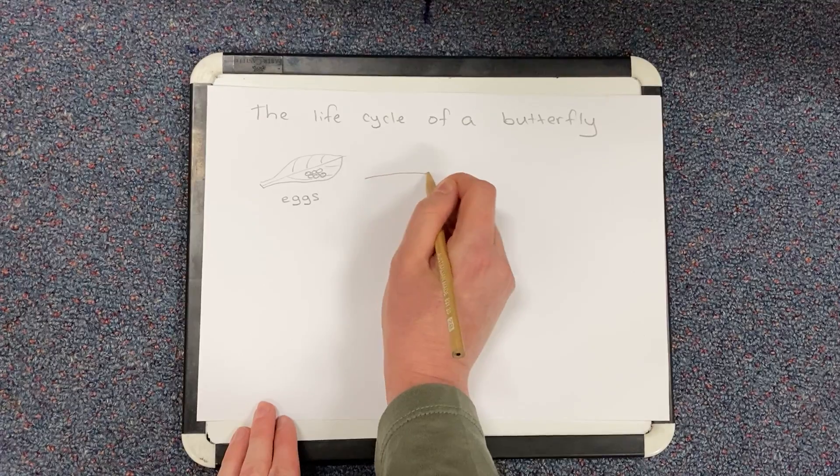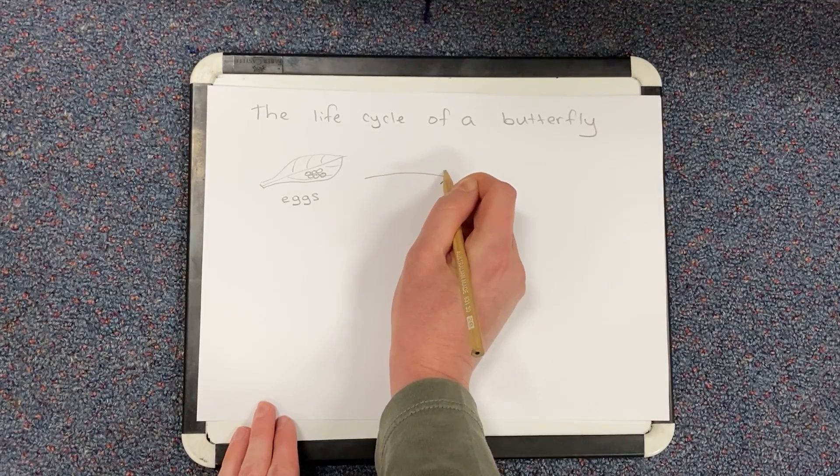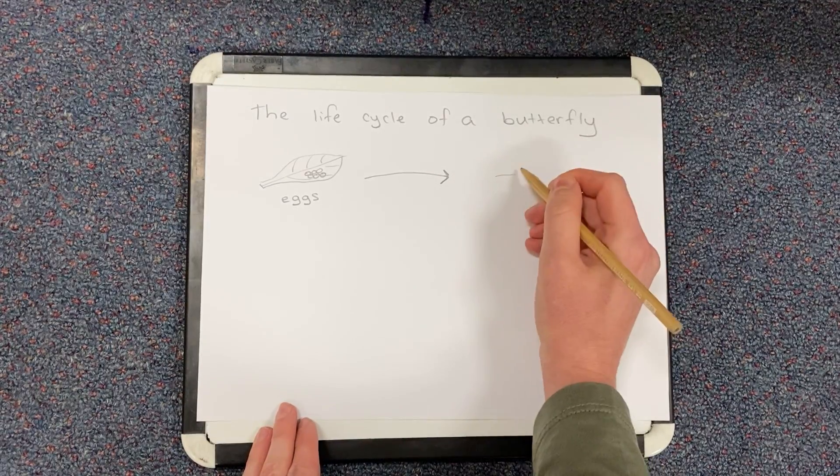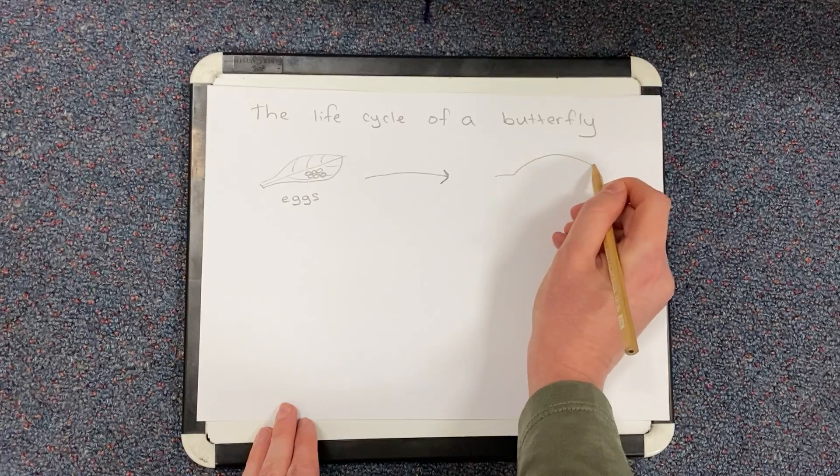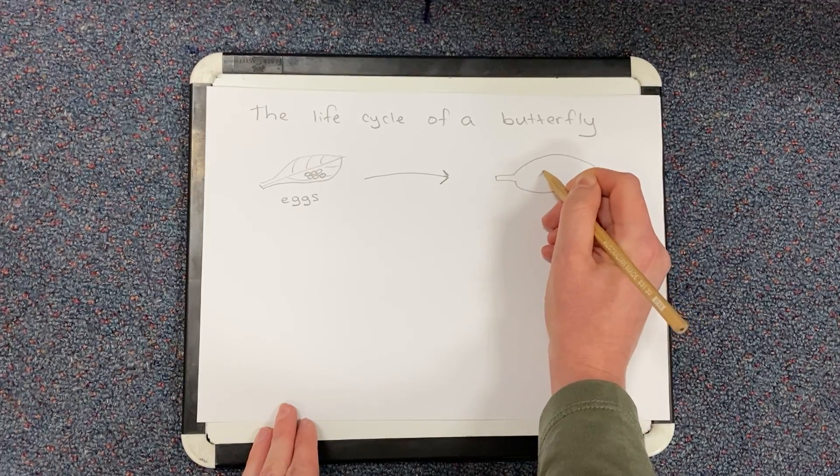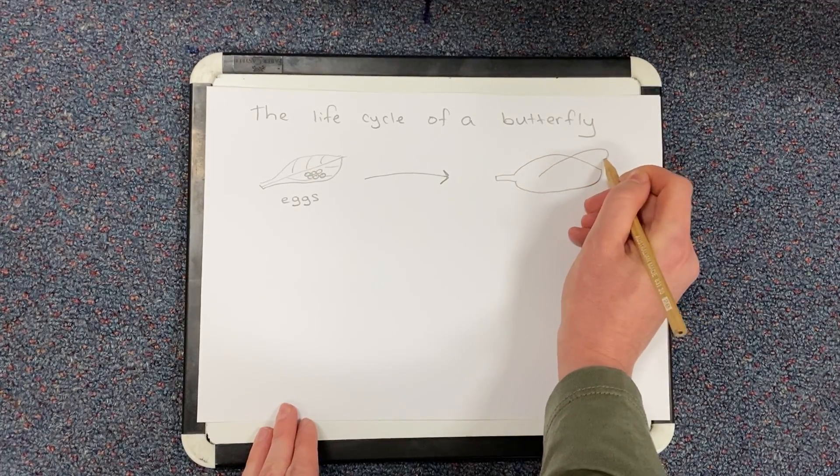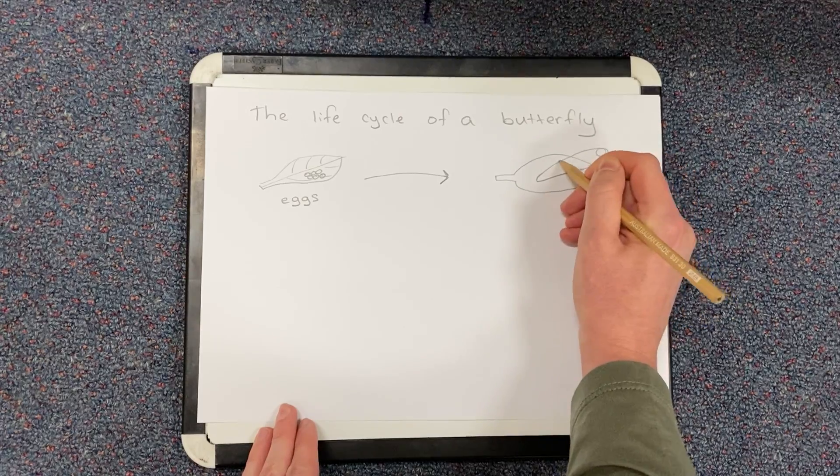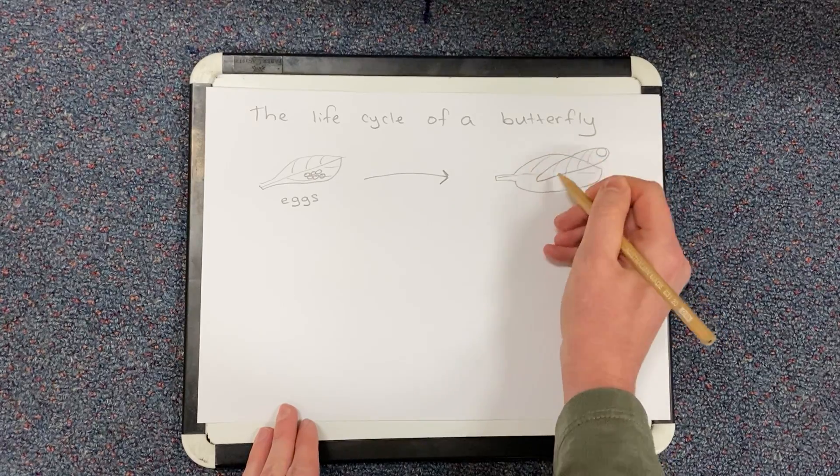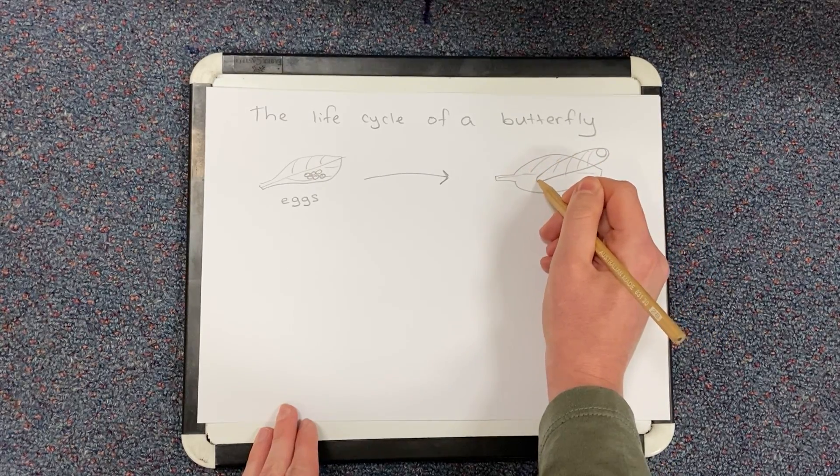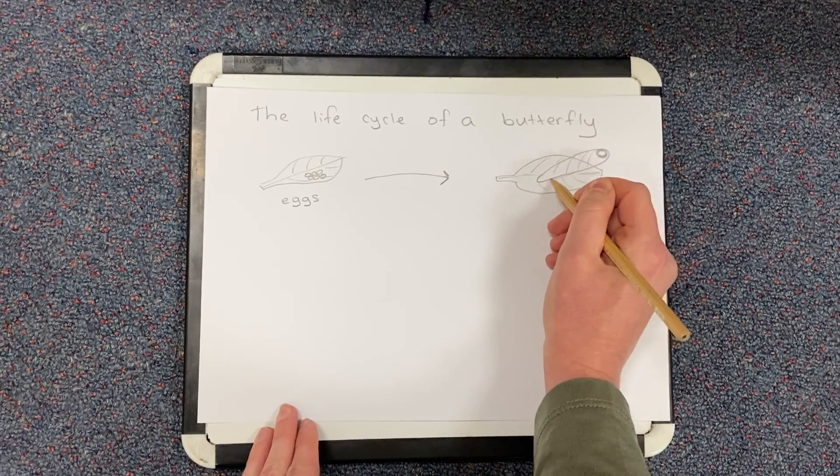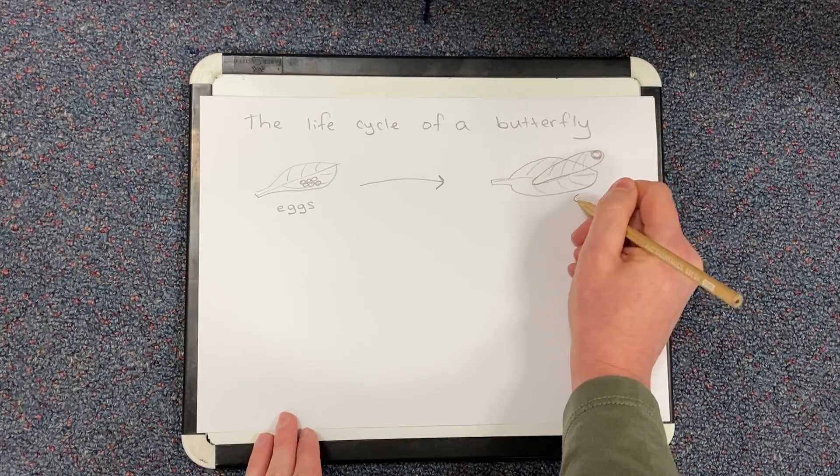Then I'm going to draw an arrow to my next picture. Here's my arrow. And my next picture is going to be of a caterpillar. Because once the eggs hatch, there's going to be a big caterpillar that comes out. So there's my leaf. And I'm going to draw my caterpillar over there. That's my caterpillar. There he is sitting on the leaf. And I'm going to write caterpillar.